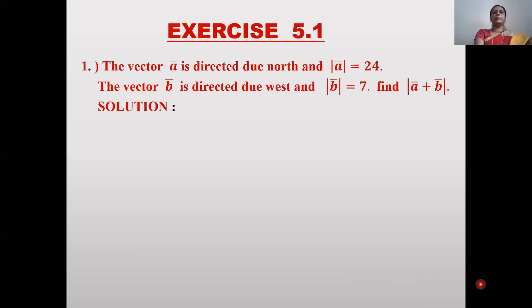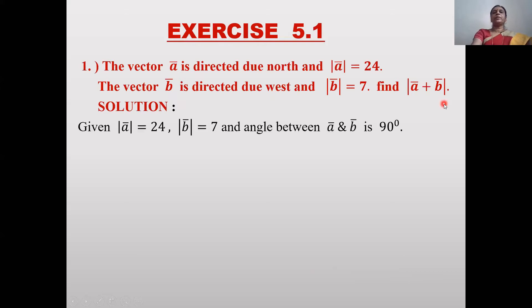Dear students, today we will see Exercise 5.1 from the chapter on Vectors. The first problem: a vector ā is directed due north and |ā| = 24. Vector b̄ is directed due west and |b̄| = 7. Find |ā + b̄|. Here what is given: |ā| = 24, |b̄| = 7.